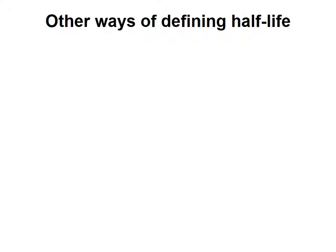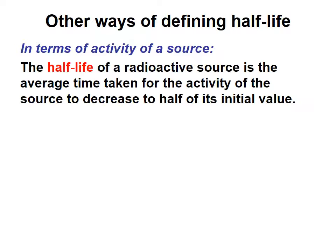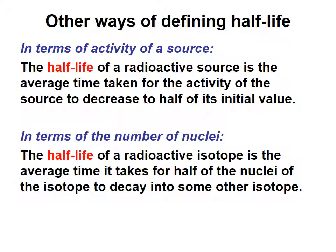There are other ways to define half-life. We use the terms of activity of a source. So the half-life of a radioactive source is the average time it takes the activity to decrease by a half of the initial value. In terms of number of nuclei, the half-life of the radioactive isotope is the average time it takes for half the nuclei of an isotope to decay into another more stable isotope.